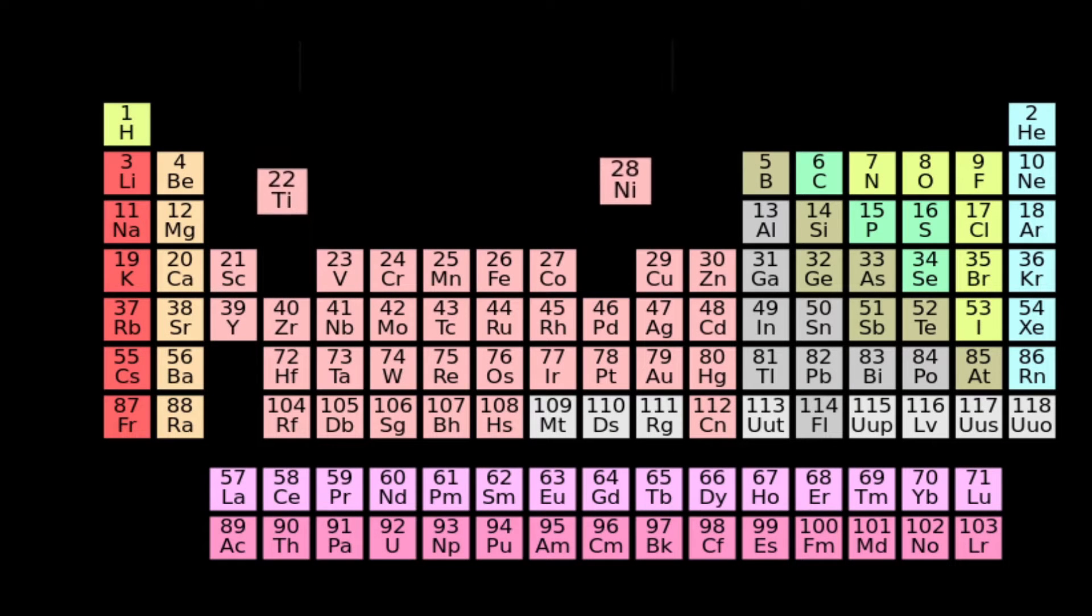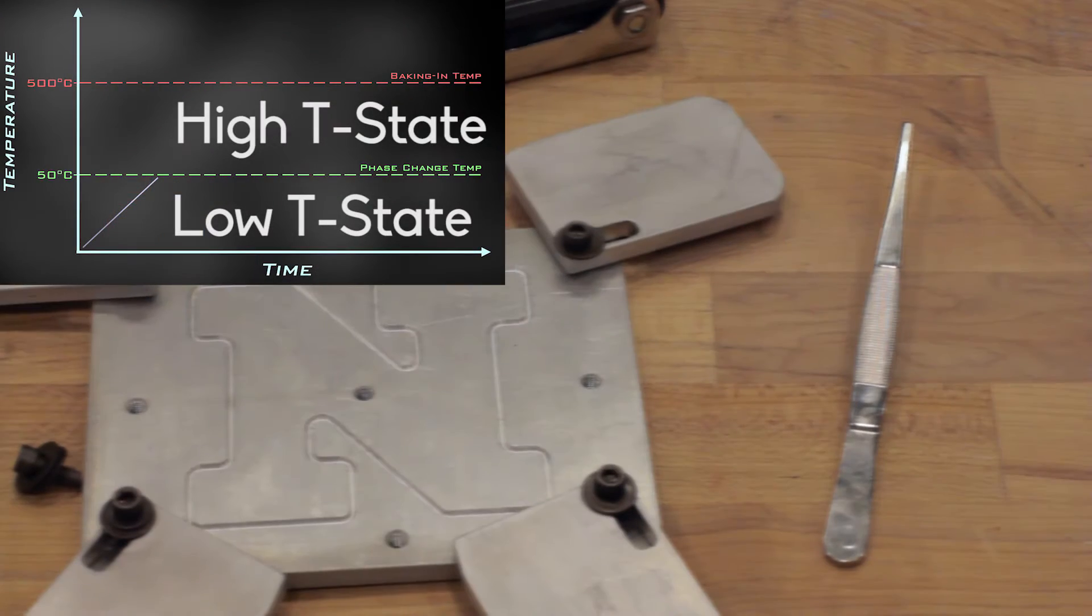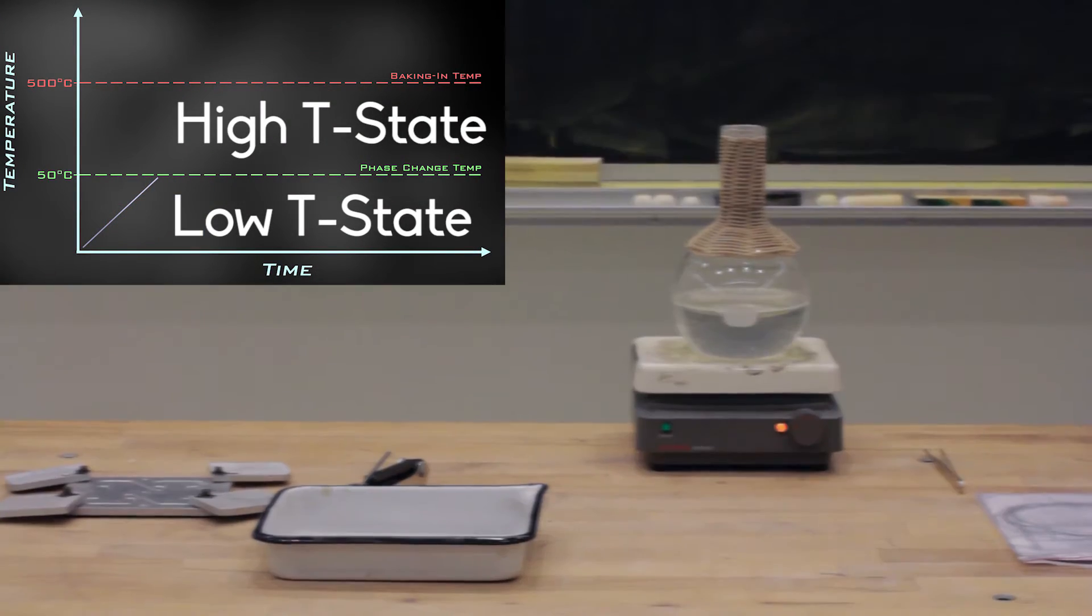To demonstrate a phase change, we will make use of nitinol wire. It is an alloy of nickel and titanium, which has two different structure states. We will simply refer to these as the low temperature state and the high temperature state.